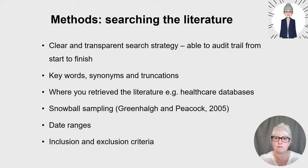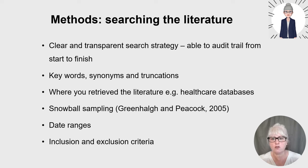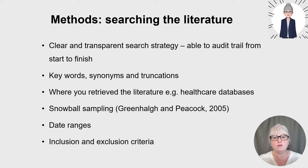The things you need to detail include: keywords, synonyms and truncations; where you retrieved the literature — major sources will be empirical primary research and subject-specific healthcare databases such as the Cochrane Library, CINAHL, and Medline; you need to list which databases you used. You may also use data websites, professional bodies, or government websites, and you need to detail all of that. You might also use snowball sampling — also called reference tracking — where you scan reference lists of full-text papers and use your judgement to pursue papers that link to your research.